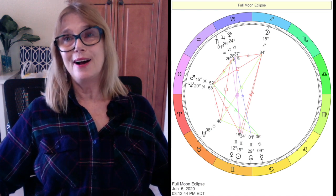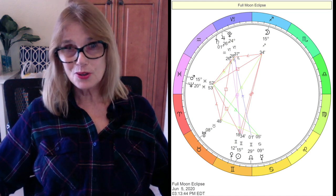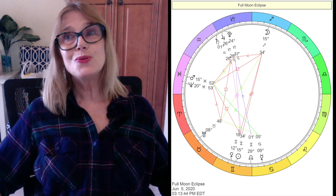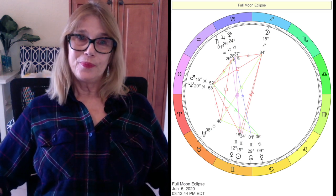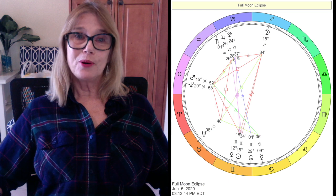Sagittarius is learning. It's higher learning. It's knowledge, it's wisdom. It's Zeus. So you look for Sag's ruler, Jupiter, and it's in Capricorn.